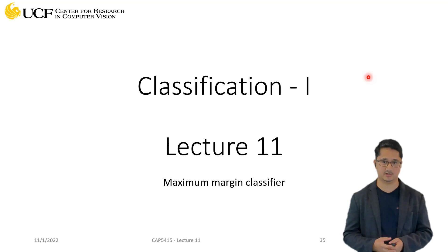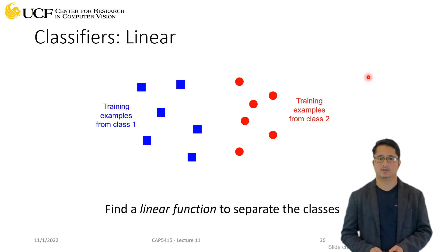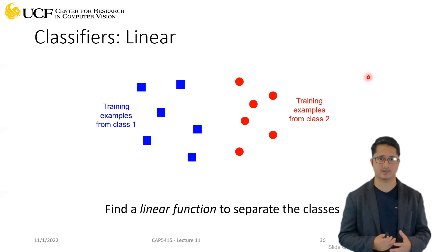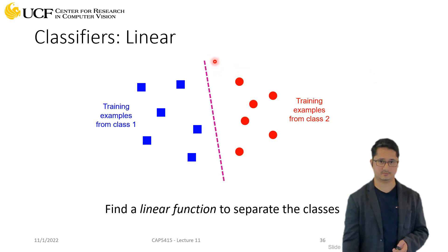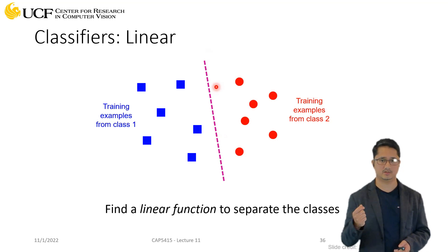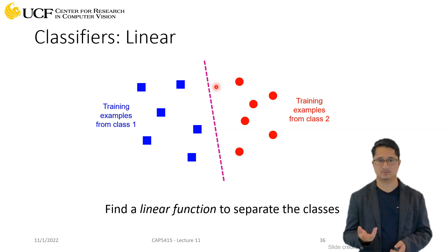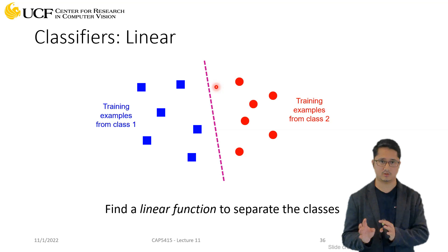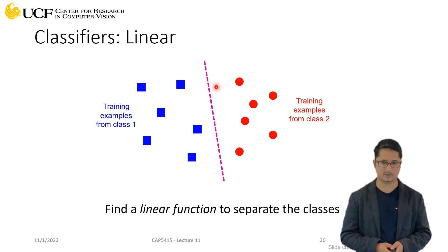The decision boundary defines what kind of classifier you will have. The most basic could be a linear classifier — you have a linear boundary, and as we discussed, a line just needs two parameters to define it: the slope and the x or y intercept. To learn a linear classifier you only need to learn two parameters. Linear classifiers might not always be sufficient, and later we'll introduce non-linearity, but for now let's focus on linear classifiers.